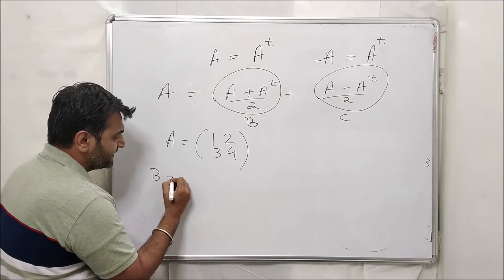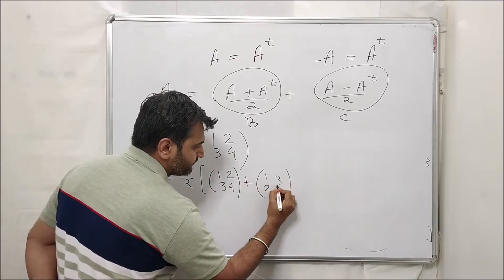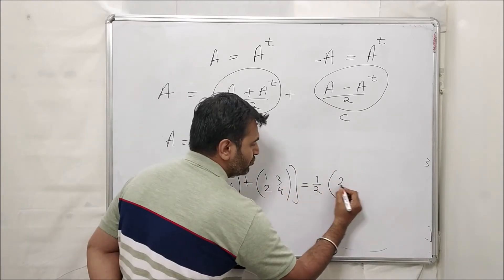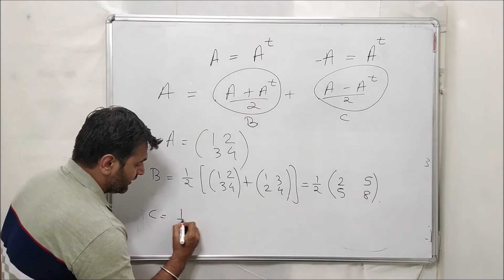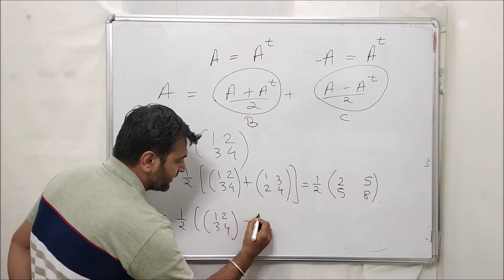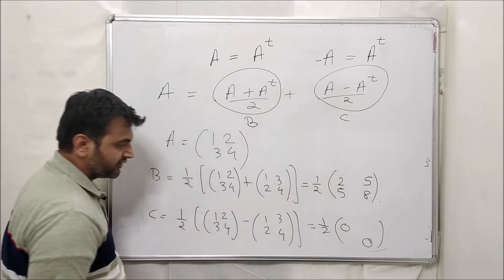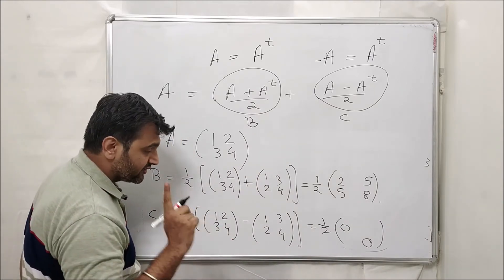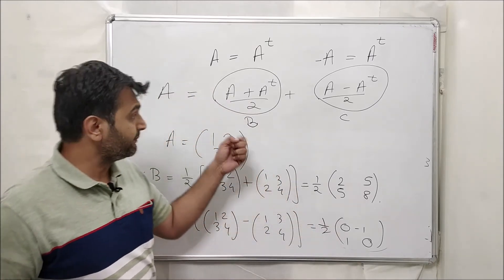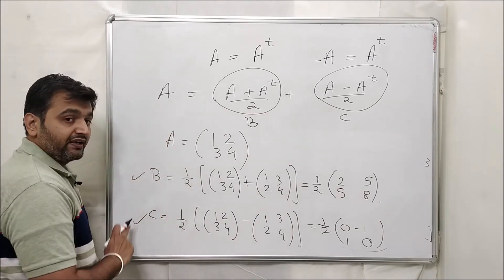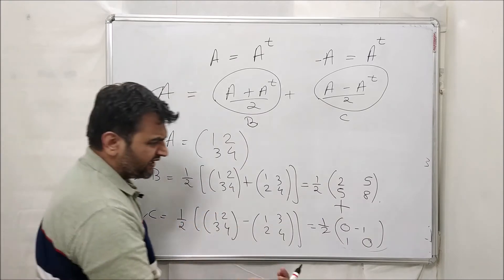A transpose is obtained by interchanging rows and columns. Adding A and A transpose gives [2, 5; 5, 8], so B equals (1/2)[2, 5; 5, 8]. For C, we compute (A minus A transpose) over 2. The diagonal entries cancel to zero, and we get C equals (1/2)[0, -1; 1, 0]. No need to re-verify symmetry properties since we already proved them.